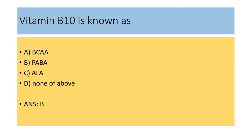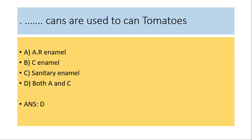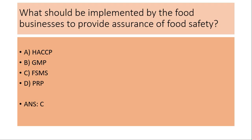Which cans are used to can tomatoes? (a) AR enamel cans, (b) C enamel cans, (c) Sanitary enamel cans, (d) Both A and C. The answer is both A and C — AR enamel and sanitary enamel cans.